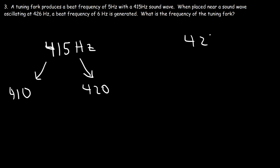Now when placing a tuning fork next to a 426 Hertz sound with a beat frequency of 6 Hertz, it could be 426 plus 6, which is 432, or it could be 426 minus 6, which is 420.